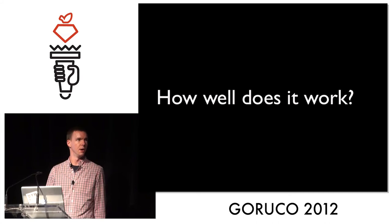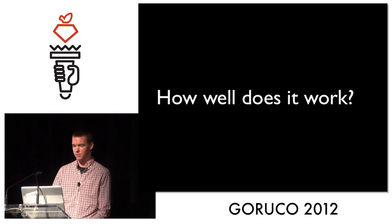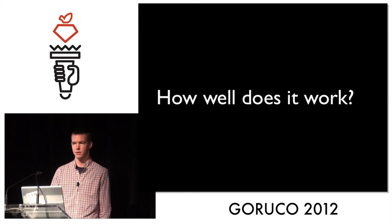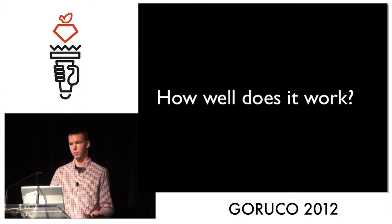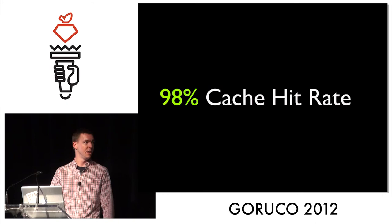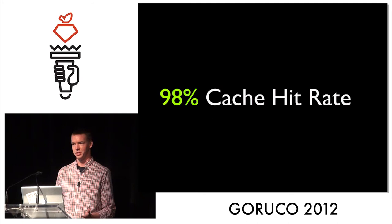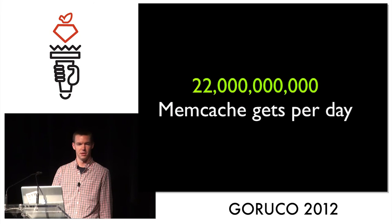So how well does it work? The non-benchmark answer is that it works really well. We don't really think about it much at all — it just kind of works and we don't have to deal with it very much other than adding new records and occasionally invalidating on migrations. The more measurable side is that we have about a 98% cache hit rate at Yammer. Basically 2% of our queries miss cache, which is pretty awesome. And that's definitely not a very small sample size, so it works.